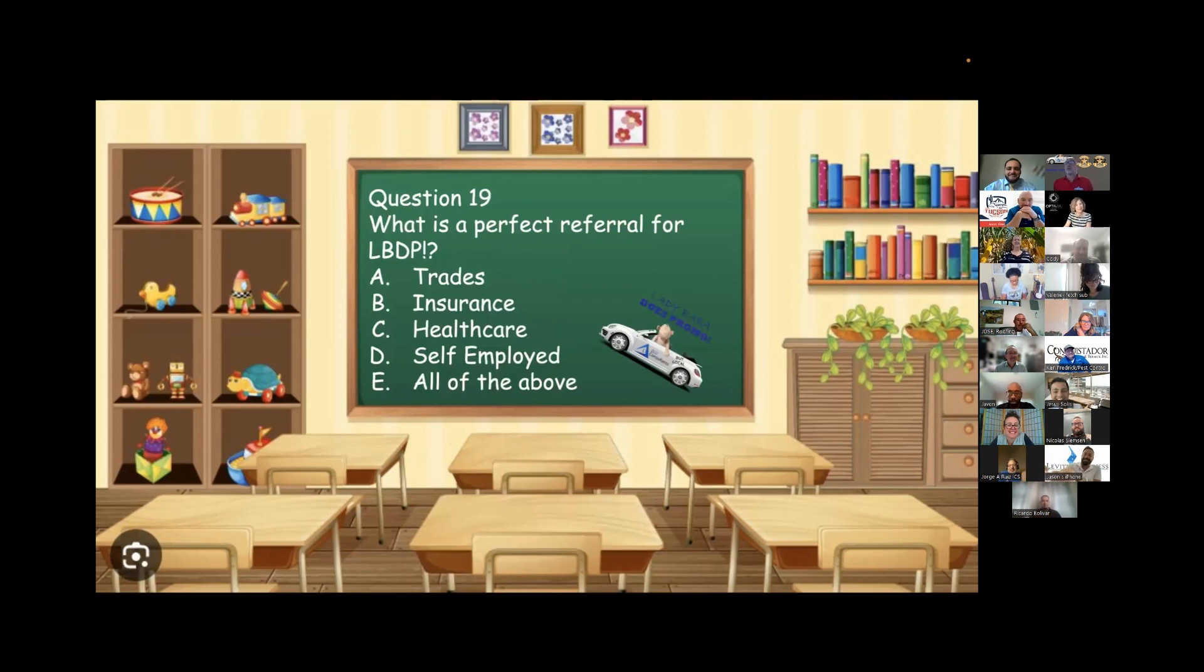Question 19. Ricardo, you moved back over to the end. That's weird. You're going to get question 19 as well. What is a perfect referral for Lady Baba does promo? A, trades. B, insurance. C, health care. D, self-employed. Or E, all of the above? You're going to have to go with E. That is correct.